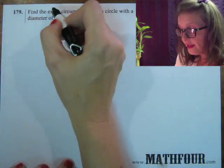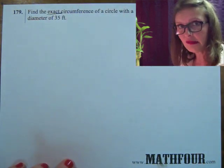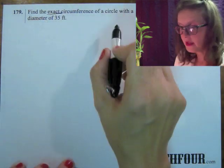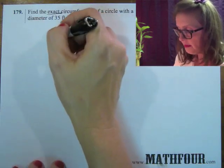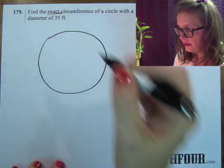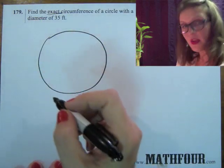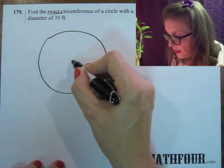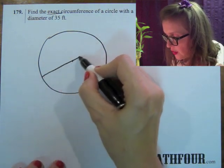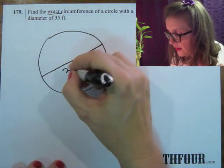The exact circumference we'll get to, we can anticipate it though, with a diameter of 35 feet. Well, that's a big circle. So diameter is from one edge to another, through the middle, from one edge to another. This is the diameter, 35 feet.